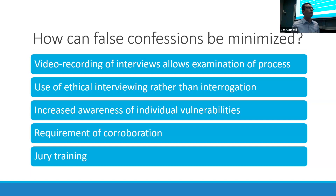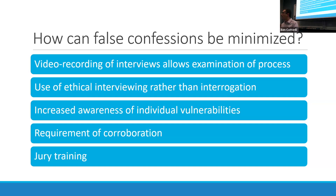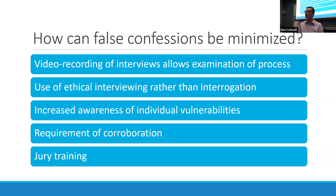Jury training could also help. If nine out of ten jurors think false confessions never happen, when in fact they occur in 25% of wrongful imprisonment cases, there's education needed. This could come from a psychologist giving expert testimony at trial or an instructional video covering the basics of false confessions and risk factors. Jurors would still examine the evidence themselves, but more informed — asking whether these risk factors appear in this case, whether the interview was conducted appropriately, and whether the confession can be trusted.